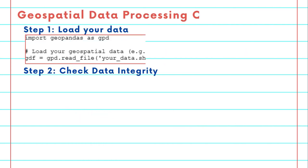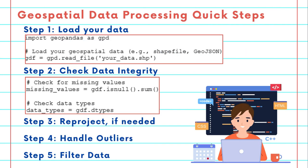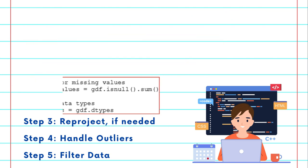Here are the quick steps. Step one: load your data. Step two: check data integrity — that is, check for missing values. Step three: reproject if needed. Step four: handle outliers. And last, step five: filter data.